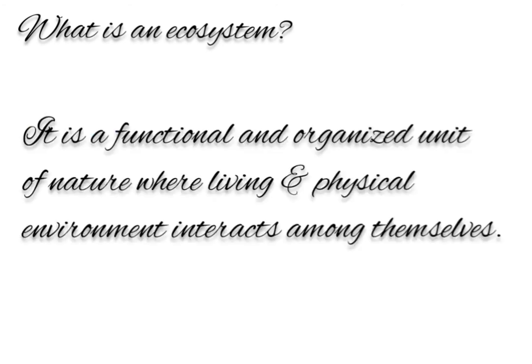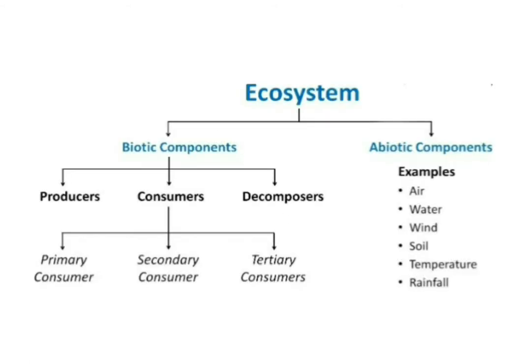A community of living organisms interacting with non-living components in a specific environment is called an ecosystem. It is a functional and organized unit of nature where living and physical environments interact among themselves. An ecosystem has biotic components — producers, consumers, and decomposers — and abiotic components such as water, light, temperature, and soil, which form the physical factors.